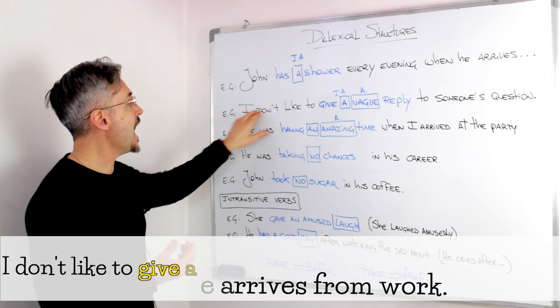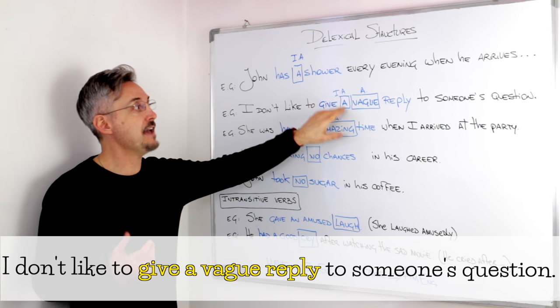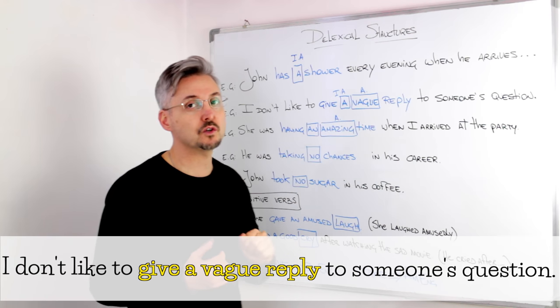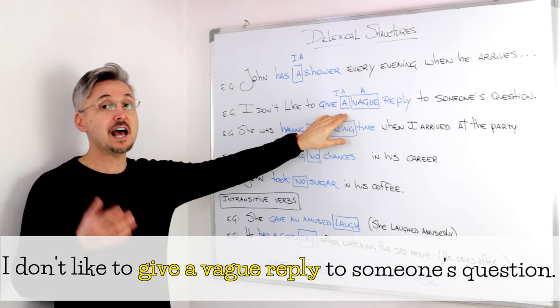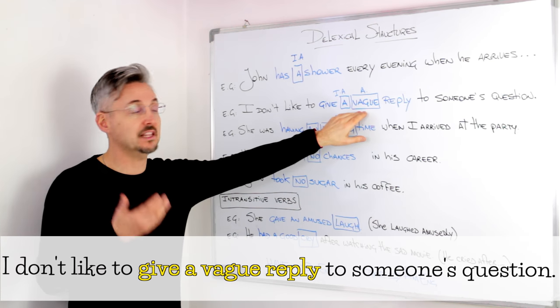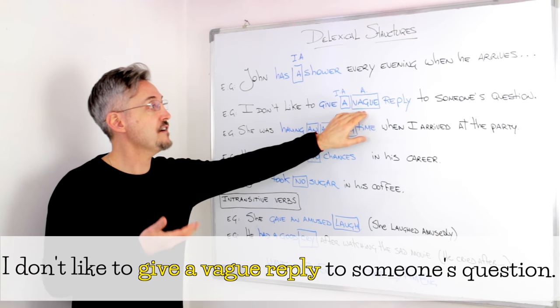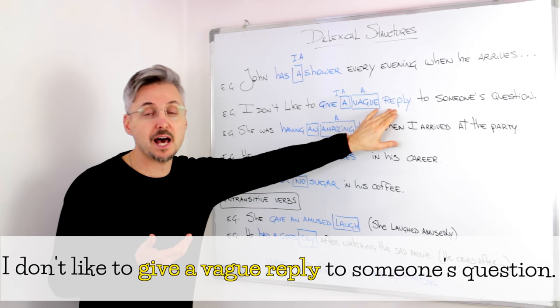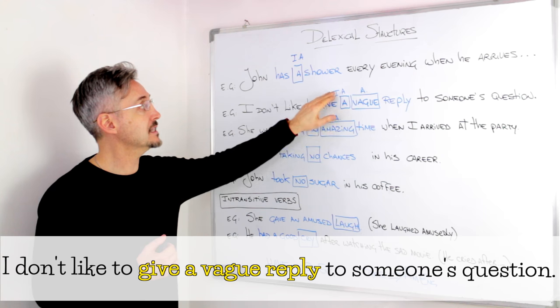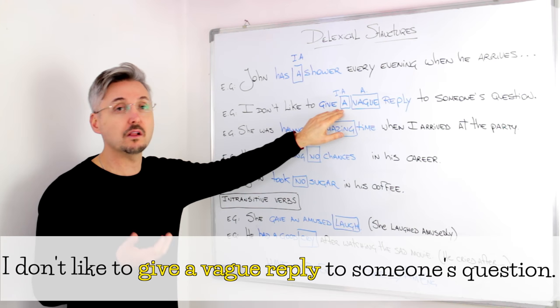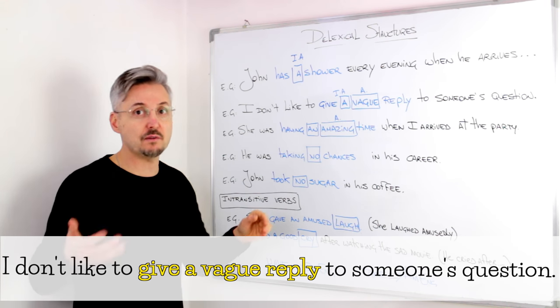Another example could be, I don't like to give a vague reply to someone's question. In this case, I added an adjective. In this case, it's vague. Vague reply. Reply is the noun. And we have the indefinite article, a, again. A vague reply.